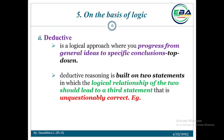In deductive reasoning, the conclusive statement is the third statement, which is unquestionably correct. The deductive logic is based on specific logical statements which are unquestionably true. Let's look at an example.